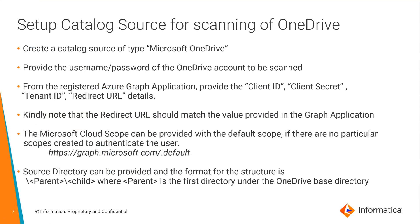The next and final step is to set up a catalog source for scanning OneDrive. Start by creating a catalog source of type Microsoft OneDrive. Provide the username and password of the OneDrive account to be scanned, and from the registered Azure Graph application provide the client ID, client secret, tenant ID, and redirect URL details. Note that the redirect URL provided in Metadata Command Center must match the value provided while creating the Graph application in Azure Active Directory. The Microsoft Cloud scope can be provided with the default scope if no particular scopes have been created to authenticate the user.